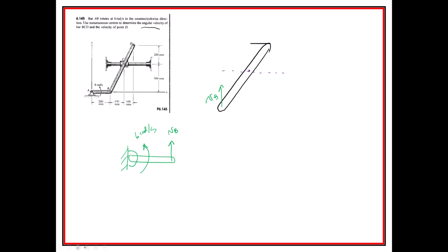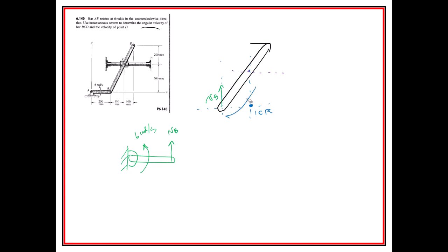To find the ICR, all you have to do is draw lines perpendicular to the velocities. It's really easy to draw a line in the direction of velocity and think the ICR is right there — it is not. The ICR is going to be right here. The angular velocity of BCD is going to be in that direction, and you can find the velocity of C, which is going to be right here.